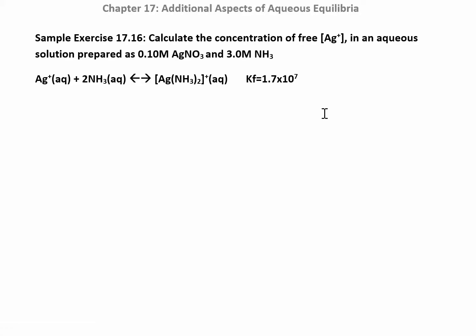Let's focus on the formation constant reactions. We have silver and ammonia forming a complex ion, and we want to find the amount of free silver ion. This K is huge, which means the reaction goes all the way to the right — we're going to make a lot of the complex and have very little reactant left over, so we're looking for a really small number. We'll have to do this in a slightly different way than usual.